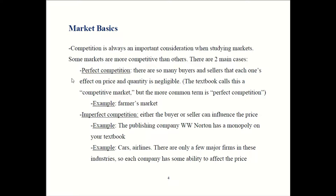The other broad category is imperfect competition, where either the buyer or the seller can influence price. There are degrees of imperfect competition. On one extreme end there is the monopoly. For example, the publisher W.W. Norton has a monopoly on your textbook — that's why textbooks are so expensive, it's monopoly pricing. You either get the book or you fail the class, so you pay the price even if it's something outrageously high like $200 for a book.